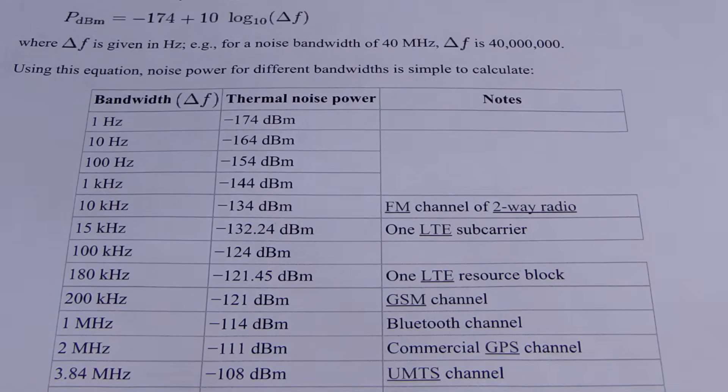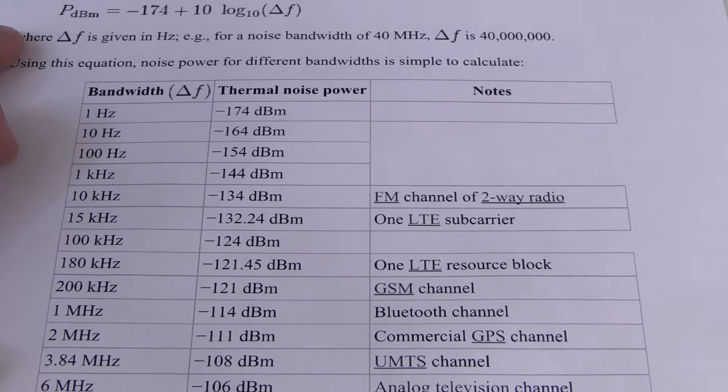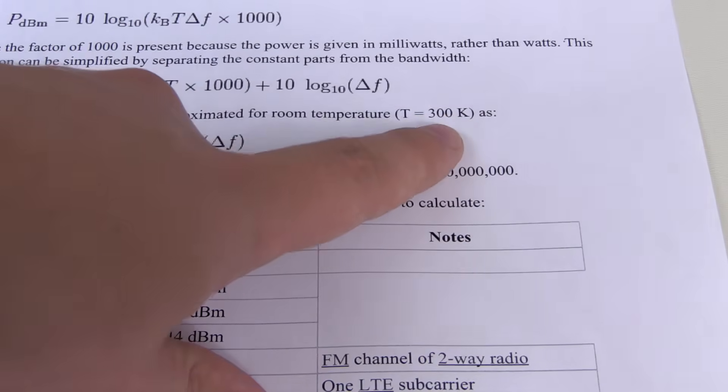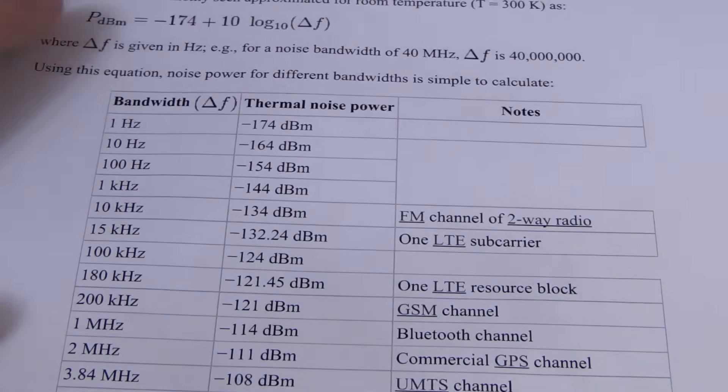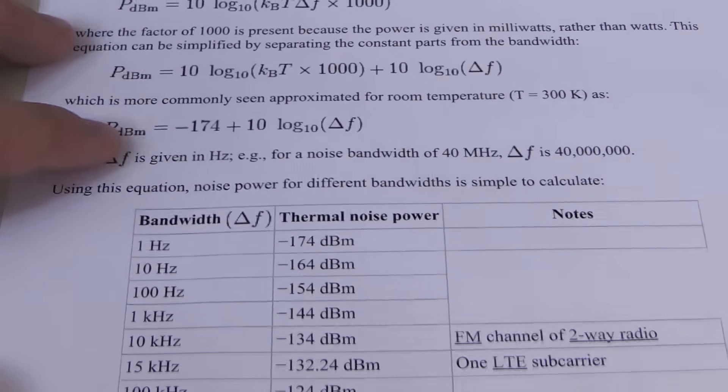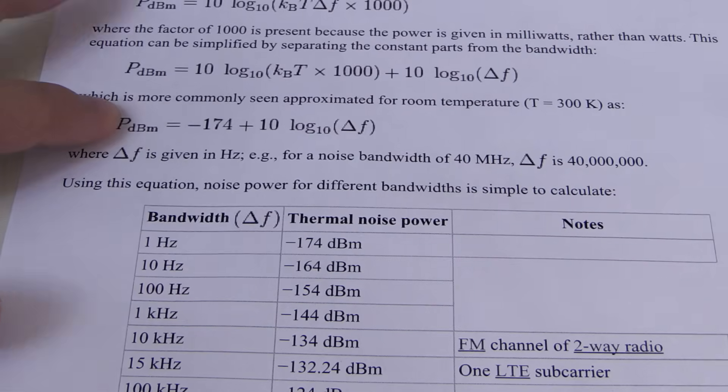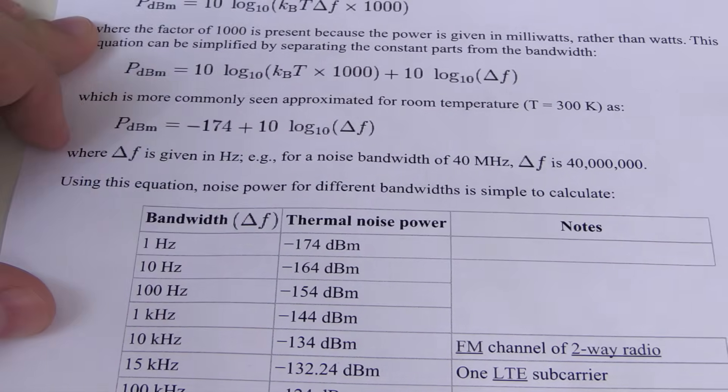Temperature, this table here assumes room temperature. Sometimes that's 290 Kelvin, I believe, and sometimes it's 300 Kelvin. This one says it's 300K. Other literature uses 290K, so that varies. But the numbers here, that's what we're going to go with. And expressed as a formula, our spectral power here is negative 174 plus 10 log 10, and then your bandwidth.